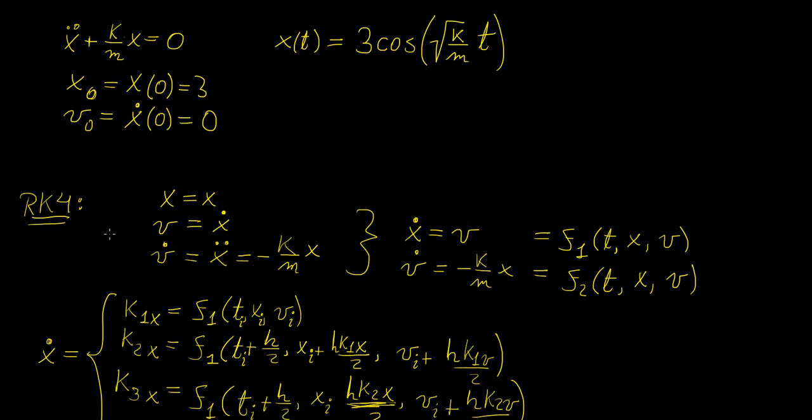Now for RK4, remember that it only works for first order differential equations, much in the same way that the Euler method only works for first order. So what we need to do is take this second order differential equation and bring it down into a system of two first order differential equations. What I did here was: let x equal x to retain the notation, let v equal x dot (the first derivative), and the derivative of v, which is the acceleration, equals this expression here.